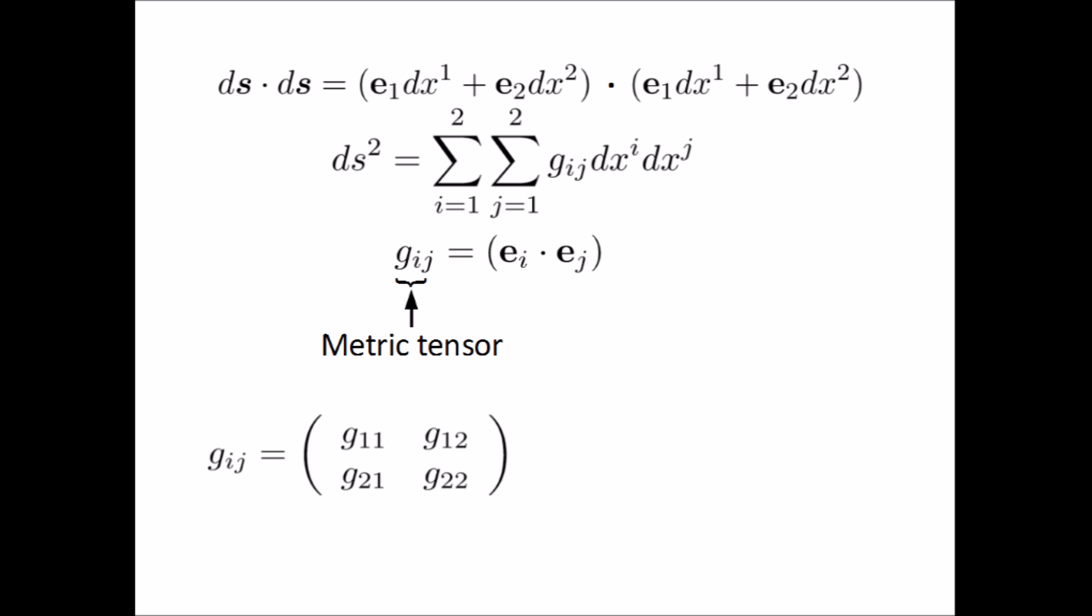In a flat space in Cartesian coordinates, the metric tensor is merely the identity matrix, in which case the square distance reduces to the classical Pythagoras formula, ds squared equals dx1 squared plus dx2 squared.